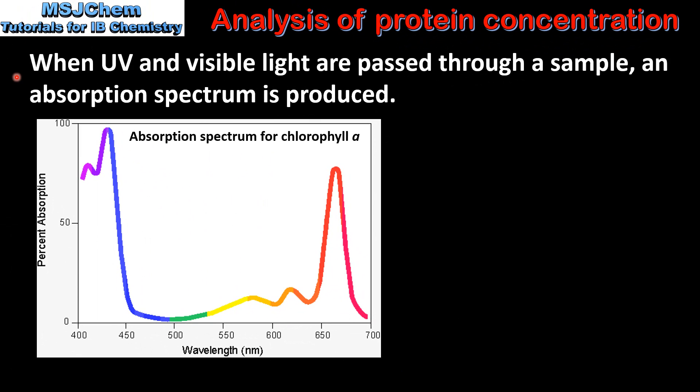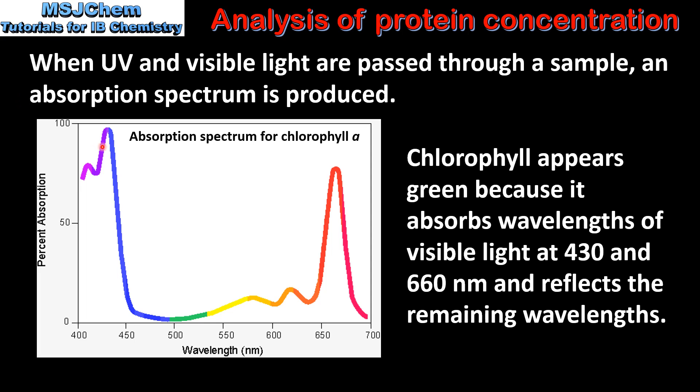When UV and visible light are passed through a sample, an absorption spectrum is produced. Here we have the absorption spectrum for chlorophyll. Chlorophyll appears green because it absorbs wavelengths of visible light at 430 and 660 nanometers. The remaining wavelengths are reflected, making chlorophyll appear green.